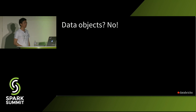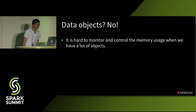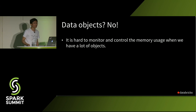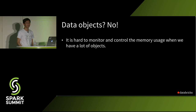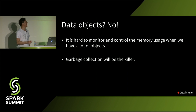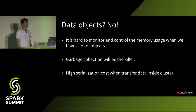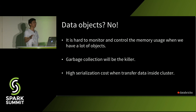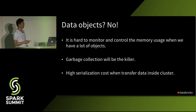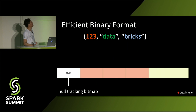There are more reasons to avoid Java objects. It's hard to monitor and control memory usage — there's nothing we can do but wait for the JVM to tell us if it's OOM or OK. It's also hard to estimate the size of JVM objects. GC is always a problem for JVM; with many objects on the heap, GC becomes a performance killer. And since Spark is a distributed engine, data must be transferred between nodes, requiring serialization and deserialization, which is very costly when using objects. Instead, Spark introduces a very efficient binary format to keep data in memory.